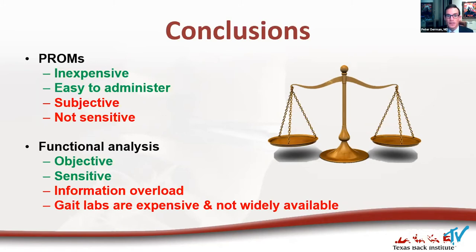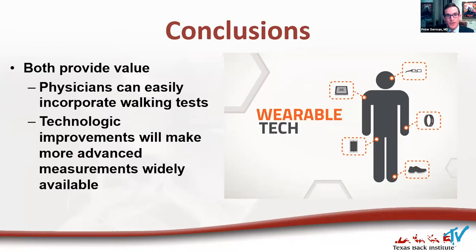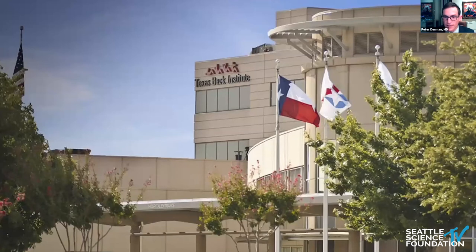Both approaches are really important. We need the subjective assessment of how the patient feels they are doing, but what also matters as surgeons is how they're functionally and objectively performing after surgery. If you don't have a big expensive gait lab, you can still do walking tests — get up and go, and timed gait studies that don't require anything except a stopwatch on your phone. Technological improvements will make more advanced measures more widely available, such as pressure mats now available for $1,000 and force plates for around $3,000, and some of these are portable as well.